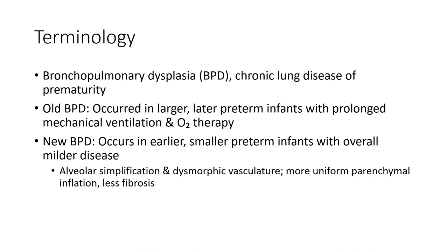It has two forms. Old bronchopulmonary dysplasia occurs in larger, later preterm infants with prolonged mechanical ventilation and O2 therapy. New bronchopulmonary dysplasia occurs in earlier, smaller preterm infants with overall milder disease, alveolar simplification and dysmorphic vasculature, more uniform bronchial inflation, and less fibrosis.